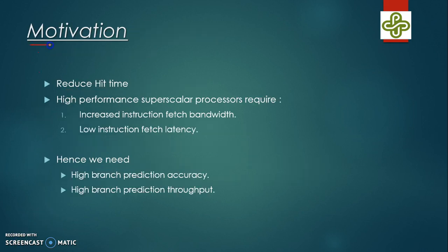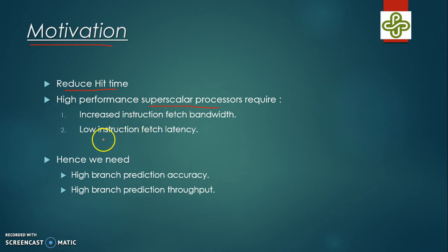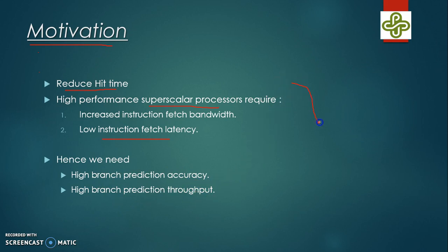So what is the motivation for trace caches? We need to reduce the hit time. Also, in high-performance superscalar processors, you need high instruction fetch bandwidth and low instruction fetch latency. For that, we need high branch prediction accuracy and high branch prediction throughput. These are some of the reasons why trace caches were invented.